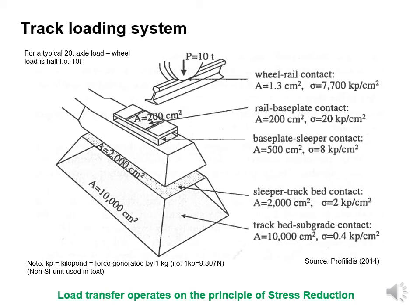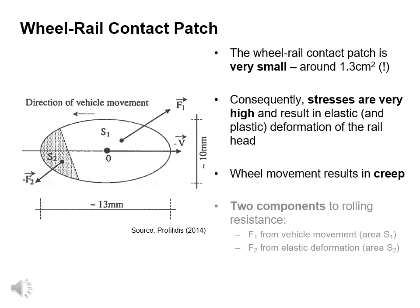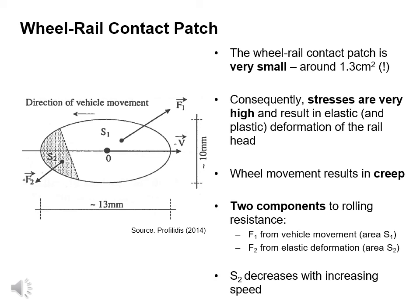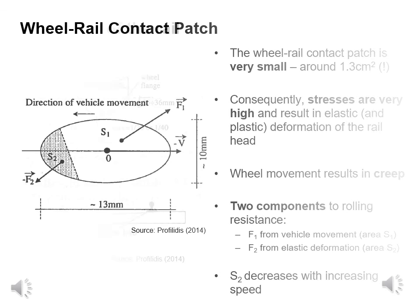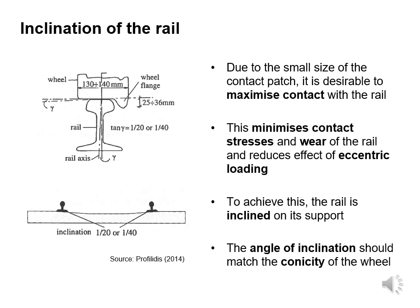The wheel-rail contact patch is very small, around 1.3 cm². Consequently, stresses are very high and result in elastic and plastic deformation of the rail head. Wheel movement results in creep. Two components of rolling resistance include F1 from vehicle movement (area S1) and F2 from elastic deformation (area S2). S2 decreases with increasing speed. Due to the small size of the contact patch, it is desirable to maximise contact with the rail — this minimises contact stresses and wear, and reduces the effect of eccentric loading. To achieve this, the rail is inclined on its support, and the angle of inclination should match the conicity of the wheel.